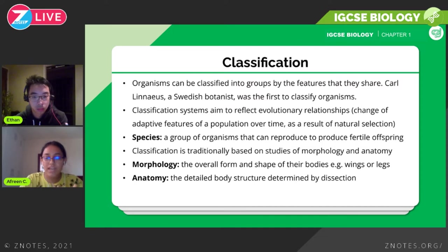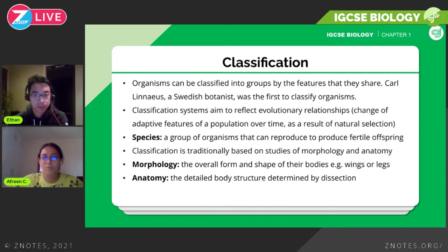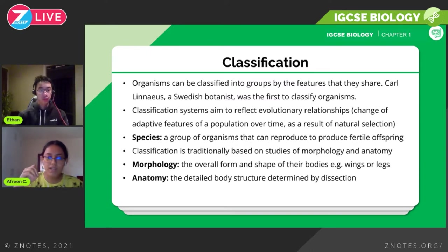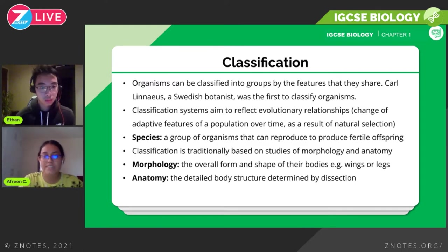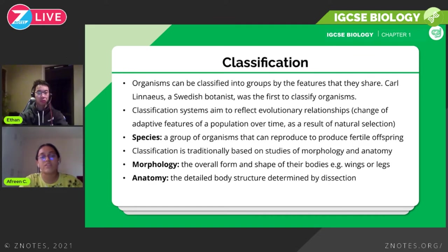There are some techniques we can use to classify organisms. Morphology is the overall form and shape of their bodies — so wings, legs, fins, and tails. If you see something with wings it's probably a bird; with four limbs, probably a mammal; with fins and a tail, probably a fish. Anatomy is more detailed — you look at body structure determined by dissection. Not everything with wings is a bird, since insects also have wings, and anatomy helps differentiate them by studying internal structure as well.